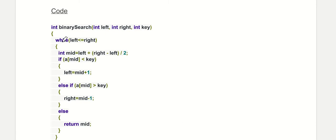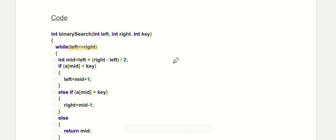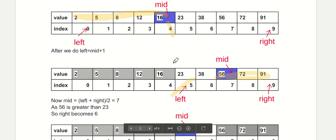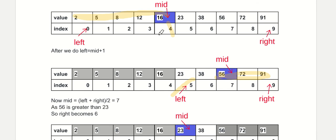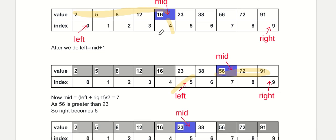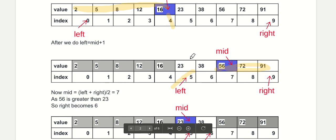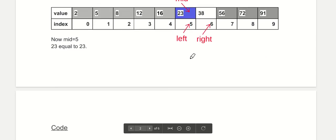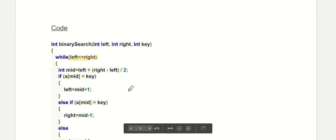Here is the code. We iterate over the array while left is less than or equal to right. This is because we are continuously moving the left variable towards the right and the right variable towards the left. At the point where left becomes greater than right, we have covered the full array and the search should stop, which is why this condition is here.